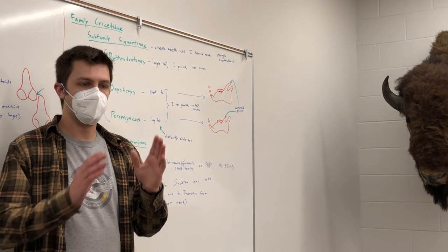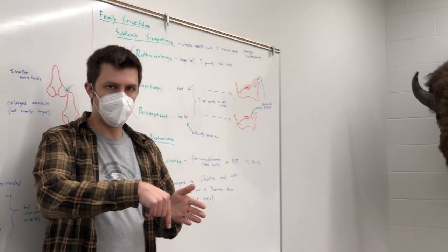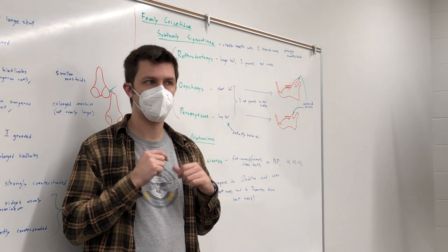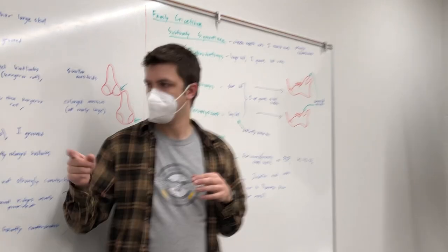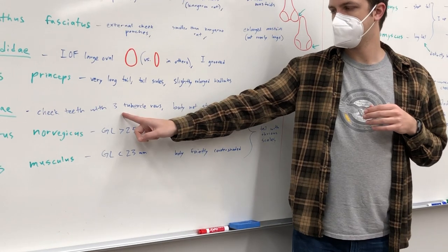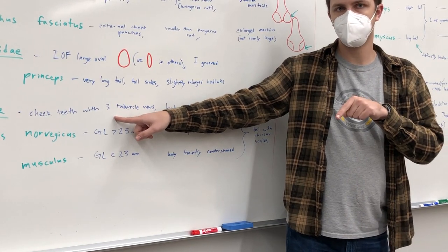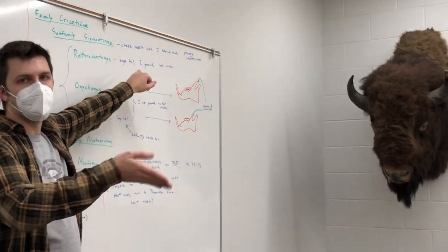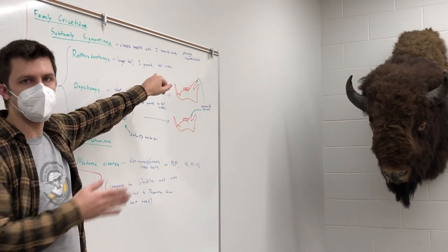Now what that means is looking at the tooth kind of top down, there are bumps, like there are bumps on our teeth, and there are either bumps along the edge in the middle and on the other edge, or bumps on either edge of the tooth with kind of a valley in the center.